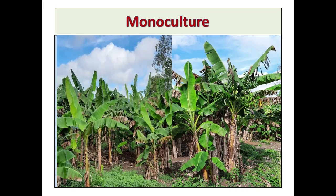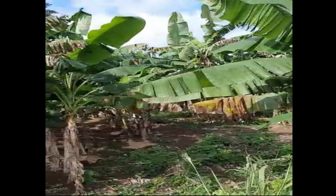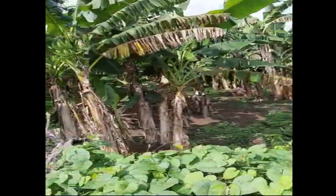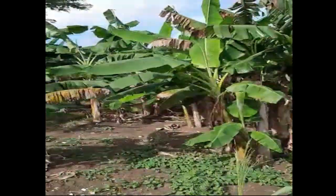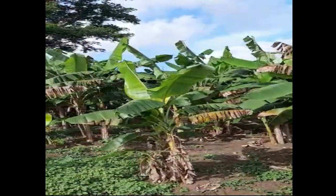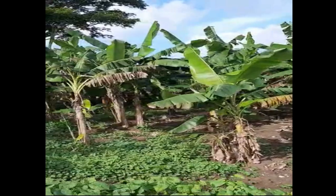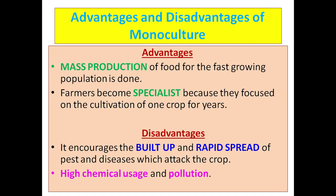Here we have a picture of a plantain farm. As you can see, there are no other crops on this piece of land — only plantains. This is a perfect example of monoculture. A large amount of land is used and the crops are there for many, many years.